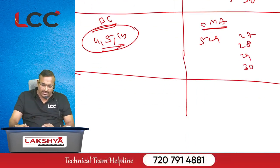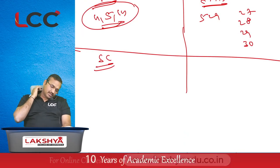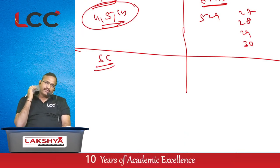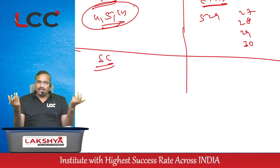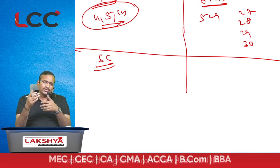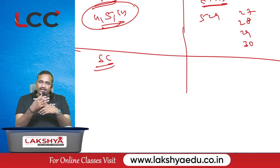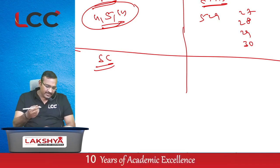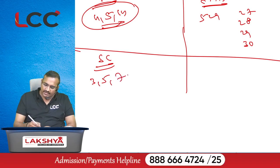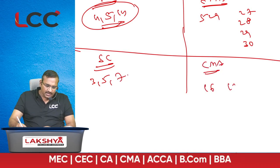Coming to standard costing from Group 1, only two models are covered: material variance and labor variance. In 70% of cases, they ask for material variance — material cost variance, material price variance, material usage variance, mix variance, and yield variance. From lecture material: question number 3, 5, and 7. From CMA material: question number 16, 19, and 22; page number 642.